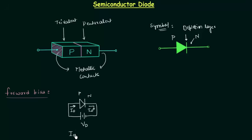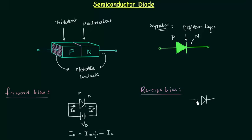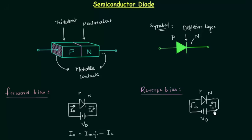Id equals the majority current due to majority charge carriers minus Is, where Is is the reverse saturation current. For reverse bias condition of a PN junction diode, the P side is connected to the negative terminal and the N side is connected to the positive terminal of the battery. The applied potential is Vd, and in reverse bias condition the only current flowing is the reverse saturation current Is.